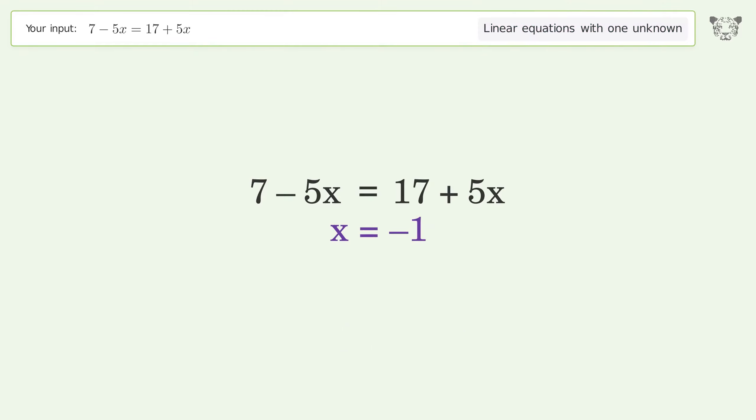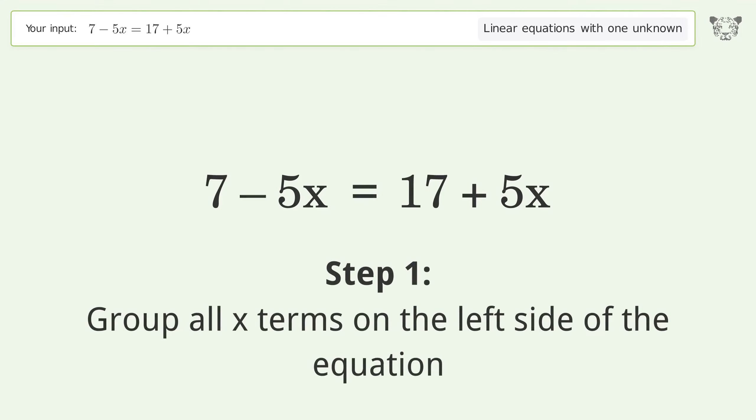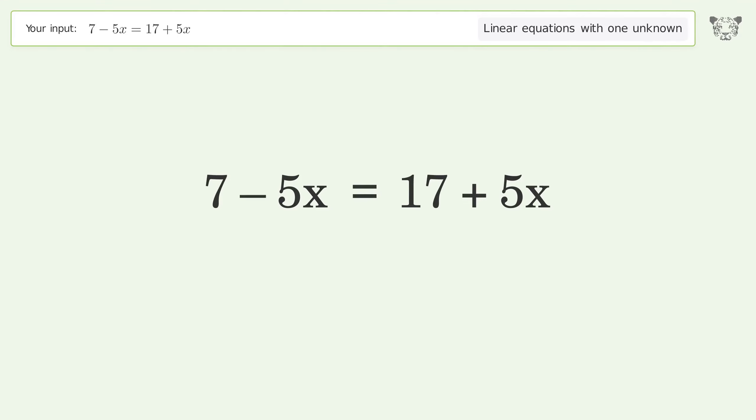You asked Tiger to solve this linear equation with one unknown. The final result is x equals negative one. Let's solve it step by step. Group all x terms on the left side of the equation.